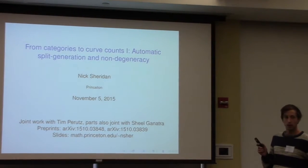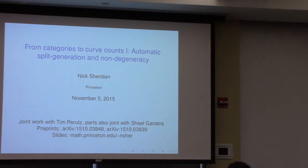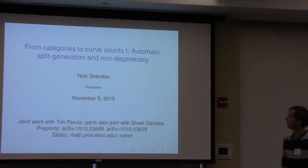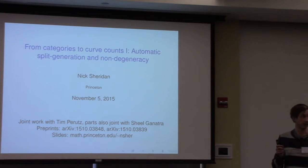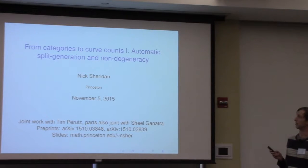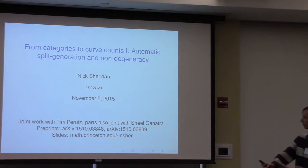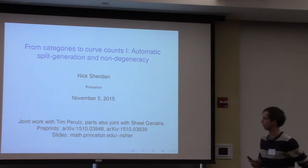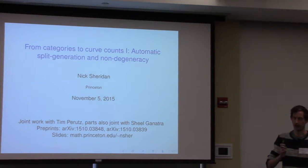So, this is the first of two talks. This one is actually not going to have any curve counts in it — that will appear in Shenatra's talk. This will just be about automatic split generation and non-degeneracy. The inputs to Shenatra's talk. This is joint work with Tim Perutz, parts also joint with Shenatra. The preprints are there, and the slides will be on the website by the end of today.